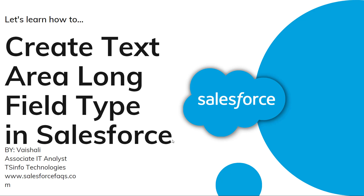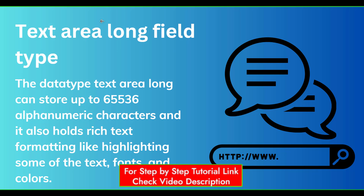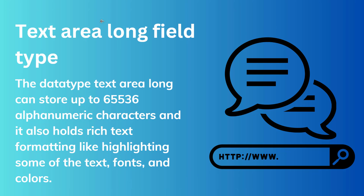Before we proceed to learn how to create it, we will first discuss what is text area long field type. Text area long field type is defined as a field type that permits the user to enter up to 131,072 characters on a separate line. We can create the long text area field on any type of object because it is useful for storing a large amount of information like descriptions, notes, and comments. The data type text area long can store up to 65,536 alphanumerical characters and it also holds rich text formatting like highlighting text, font, and colors.